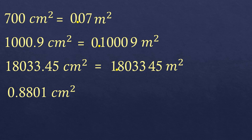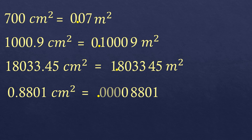Finally, we have 0.8801 square centimeters to convert into square meters. You have to be careful here — you might be tempted to move the decimal point to the right because of how the number looks. But remember: when converting square centimeters to square meters, you always move the decimal point to the left, no matter how small the number is. Moving four places to the left, 0.8801 square centimeters equals 0.00008801 square meters — a very, very small value.